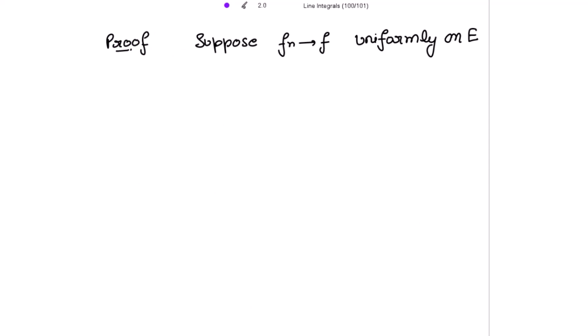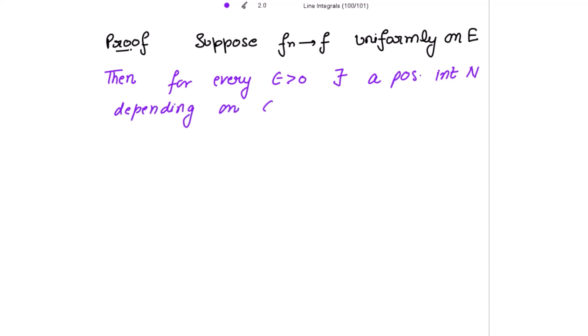Suppose fn is converging to f uniformly on e and we have to show that Mn tends to 0 as n tends to infinity. By the definition of uniform convergence, for every epsilon greater than 0 there exists a positive integer N depending upon epsilon only such that the modulus of fn(x) minus f(x) is strictly less than epsilon for all n greater than or equal to N and for all x belonging to e.